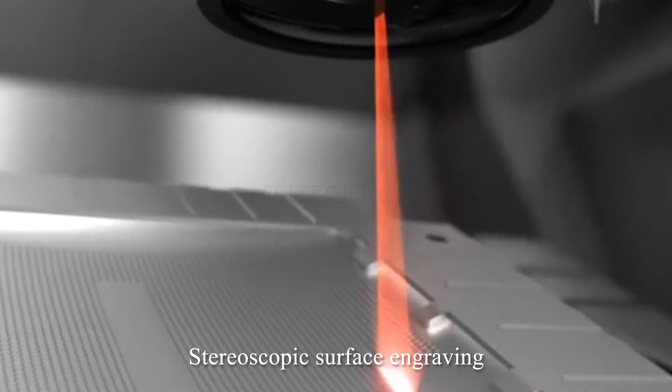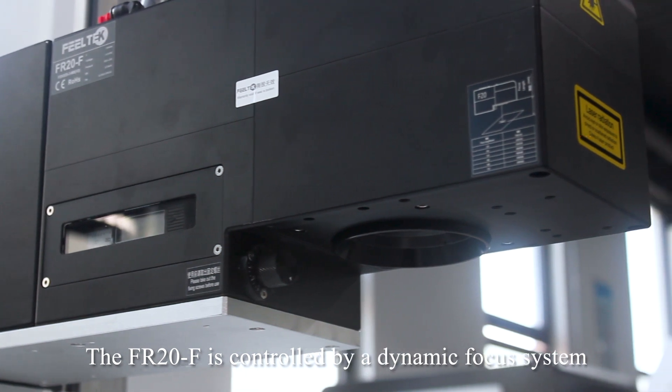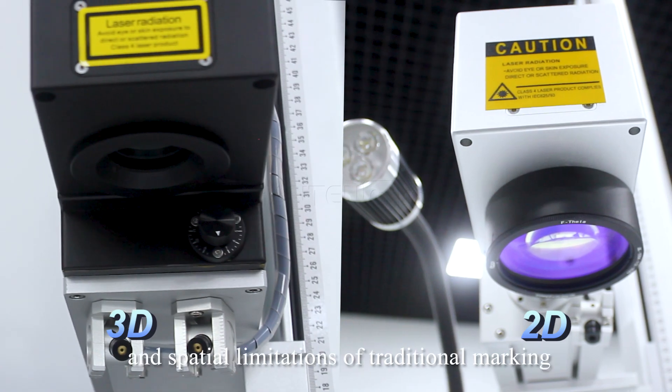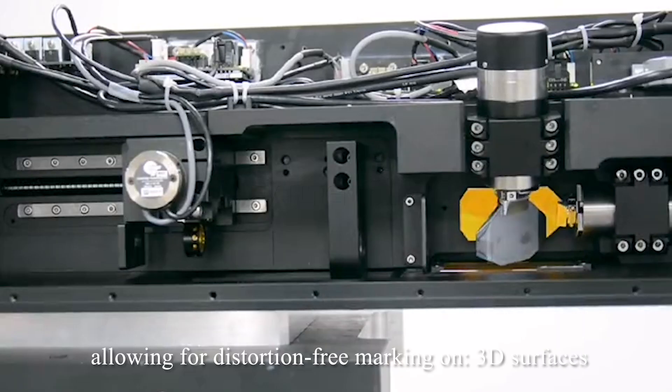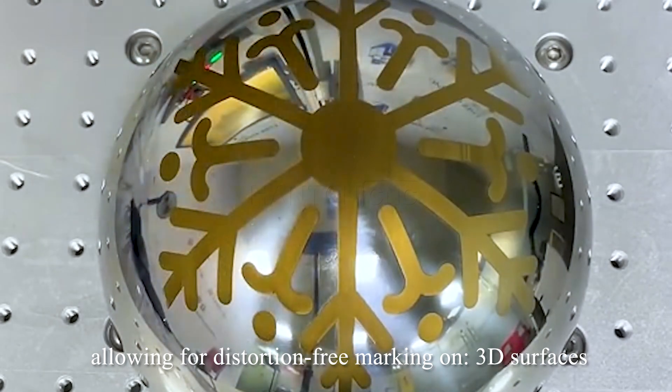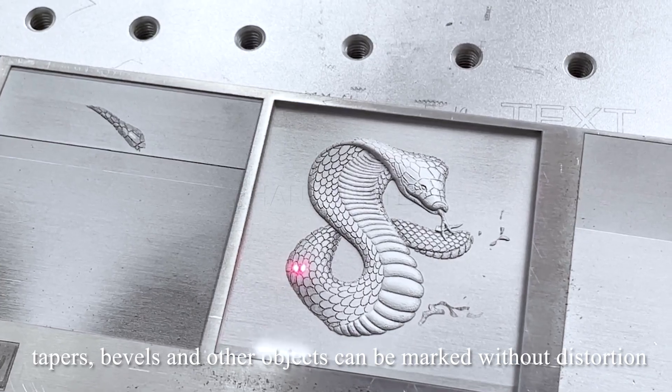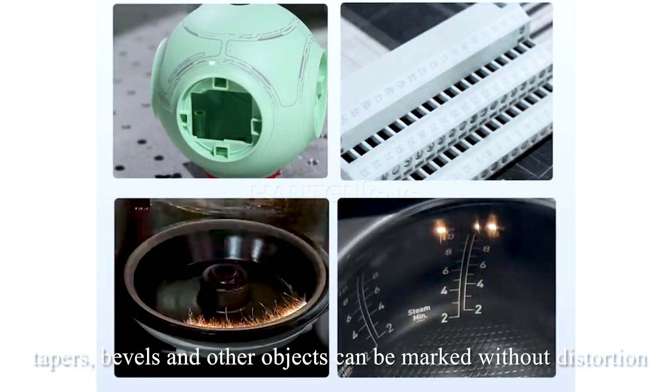3D surface engraving. The FR20F is controlled by a dynamic focus system that breaks through the dimensional and spatial limitations of traditional marking, allowing for distortion-free marking on 3D surface depth. Tapers, bubbles, and other objects can be marked without distortion.